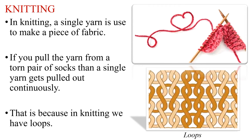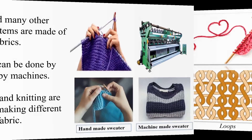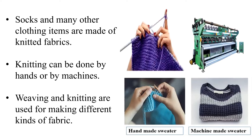Another way of making fabric from fiber is by knitting. If you pull the yarn from a torn pair of socks, a single yarn gets pulled out continuously. This is because in knitting we have loops. Socks and many other clothing items are made of knitted fabrics. Knitting can be done by hand or on machines. Weaving and knitting are used for making different kinds of fabric.